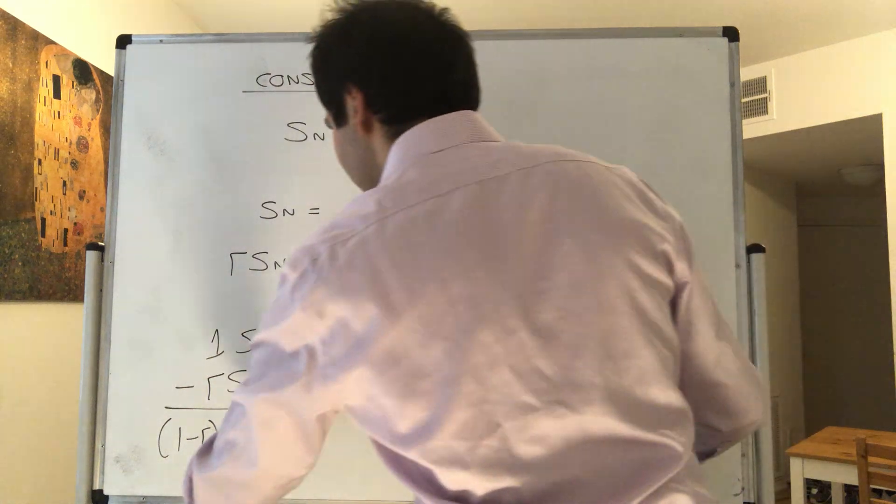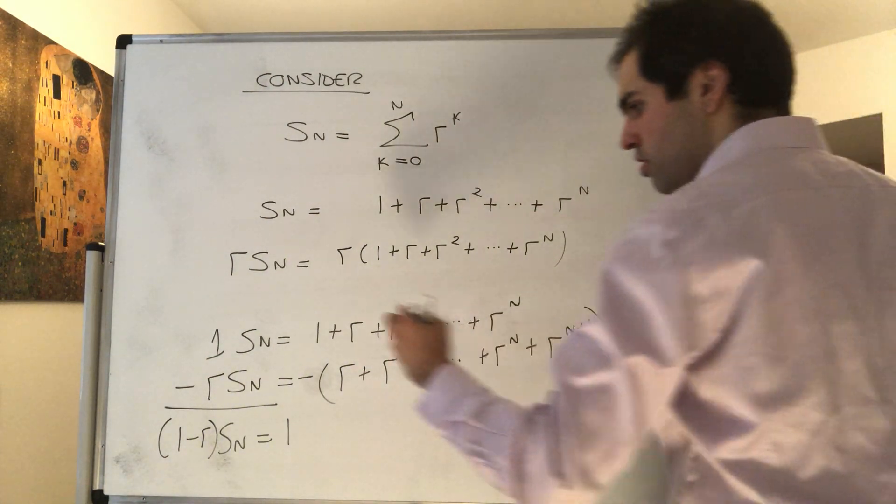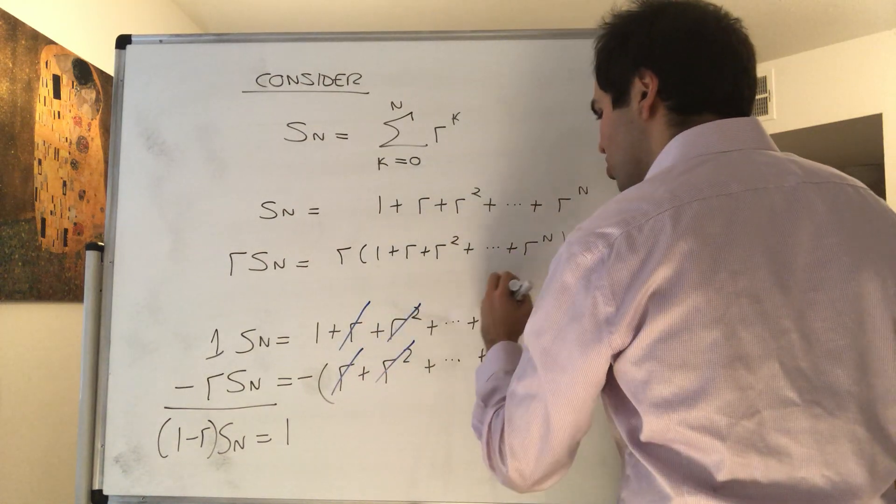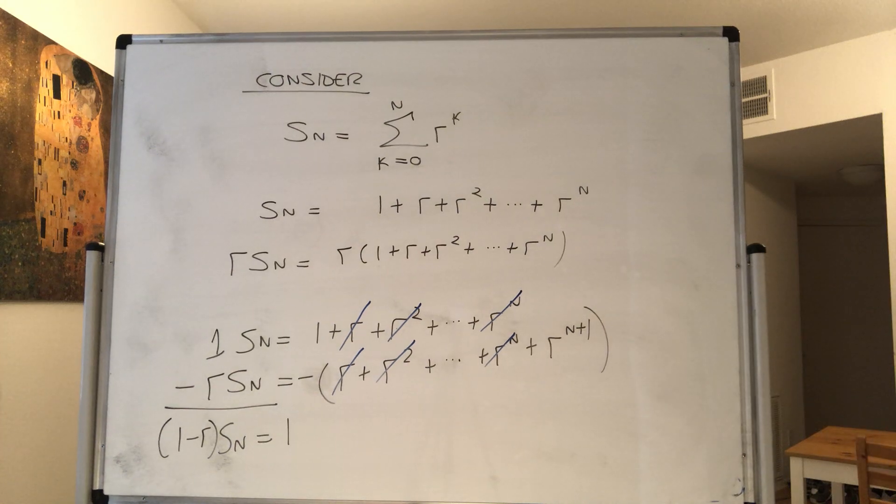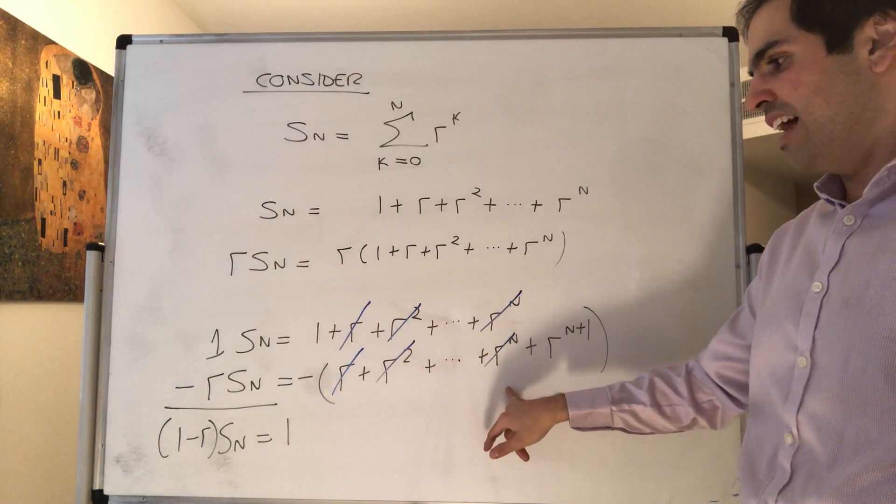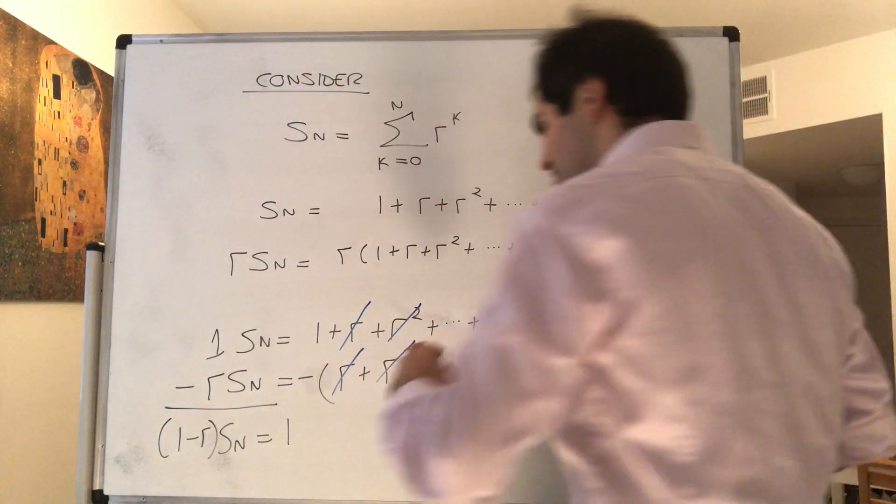Well, 1 minus 0 is still 1. But then all the other terms—r minus r is 0, r squared minus r squared is 0, r to the n minus r to the n is 0—so really all the middle terms cancel out, and all that's left is minus r to the n plus 1.